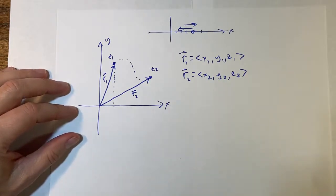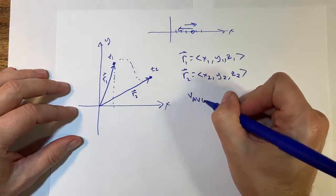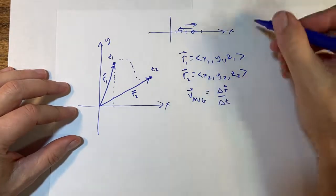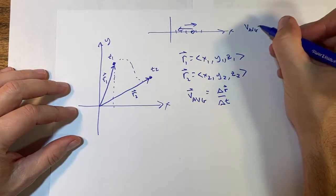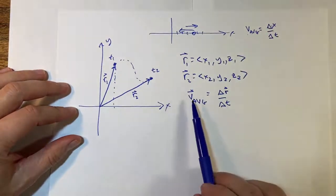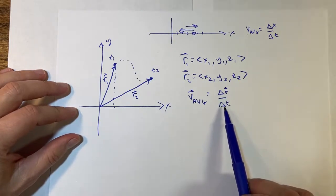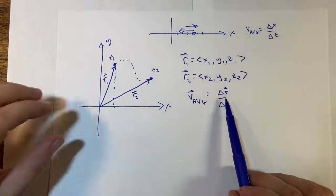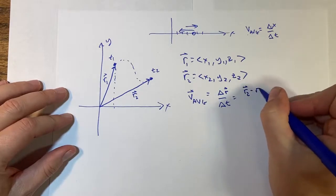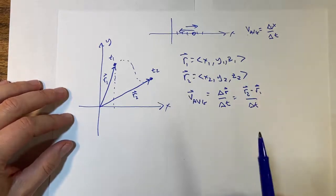What does matter is the definition of average velocity. In one dimension, v_average equals delta x over delta t — and it was scalar. Here I have the average velocity as a vector: delta r vector over delta t, where delta r is a vector and delta t is a scalar. Delta r is the final position minus initial position, so this is r2 minus r1 over delta t — it looks just like what we did before, but with vectors.